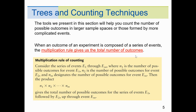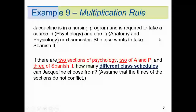When an outcome of an experiment is composed of a series of events, we use the multiplication rule — which sounds familiar from section 4.4.2. Consider events E1 through EM. The total number of possible outcomes is N1 times N2 times N3, all the way out to N sub M. The next slide will help explain what this means.